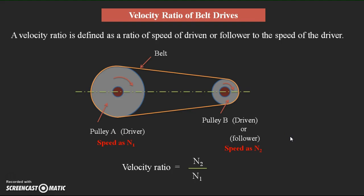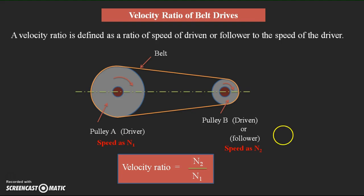According to the definition we can write the velocity ratio equation as N2 by N1. At the same time, by analyzing the proper condition during power transmission, we can give another expression for the velocity ratio.